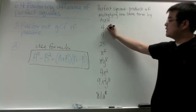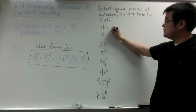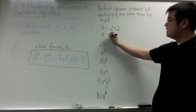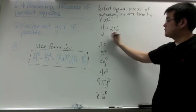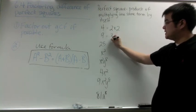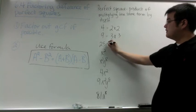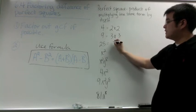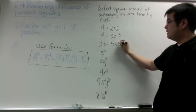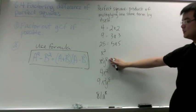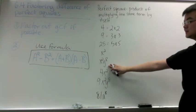4 is a perfect square because 2 times 2. 9 is a perfect square because 3 times 3. 25 is a perfect square because 5 times 5. Now we're going to move to our second grouping: variables.